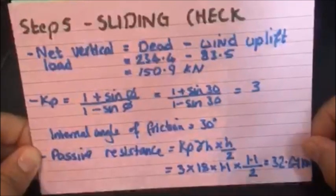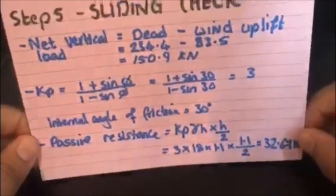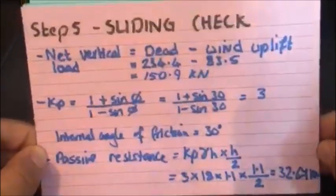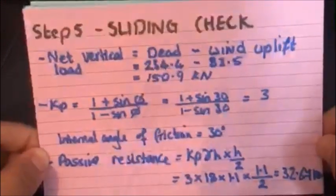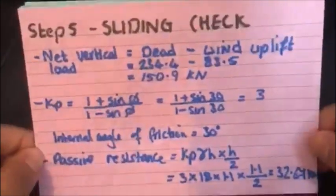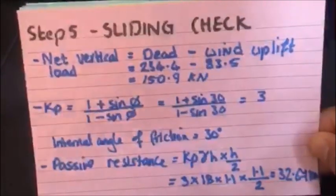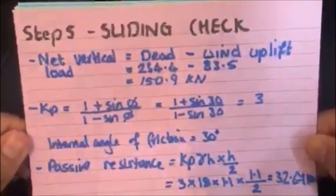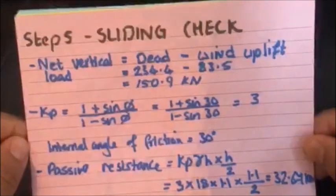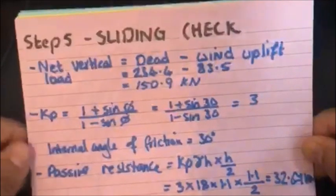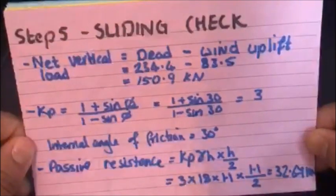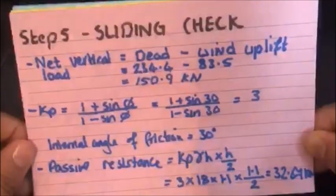Now for the sliding check, because you have a pad base and you're checking against the component that's sliding, that's pushing, that's going to push away the pad design, the parameters of the soil come into play here. So for those at university who might have studied soil mechanics, or those in industry who may have come across this, know that this kp is the passive pressure coefficient, and this is the formula right here used for it. So you have 1 plus sine of the internal angle of friction, which in this case is 30, over 1 minus sine internal angle of friction. So as a result, I've got 3, as you can see.